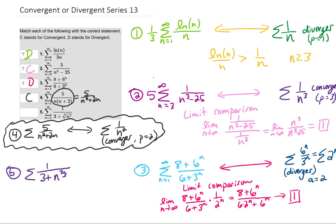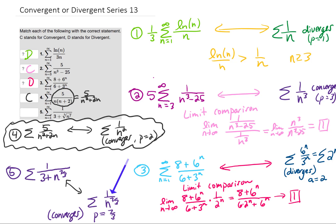For this last problem, we should rewrite the cube root of n to the 7th power as n to the 7-thirds power. That tells us this series is going to behave like 1 over n to the 7-thirds. This is a p-series, and that p value is 7-thirds, which is bigger than 1, so this series converges. Another limit comparison test — even simpler than problems 2 and 3 — is going to verify that these two series behave the same, meaning they both converge or both diverge. Since the comparison series converges, the series we're given converges as well.